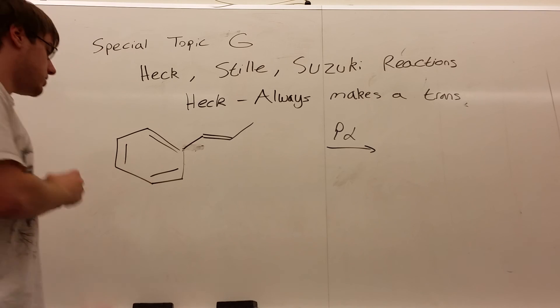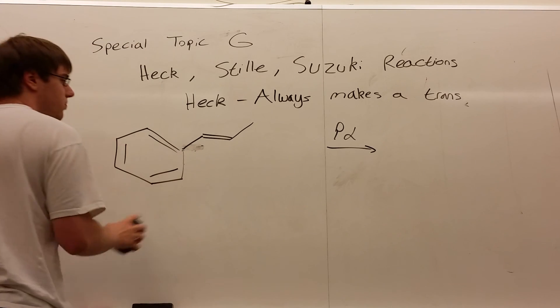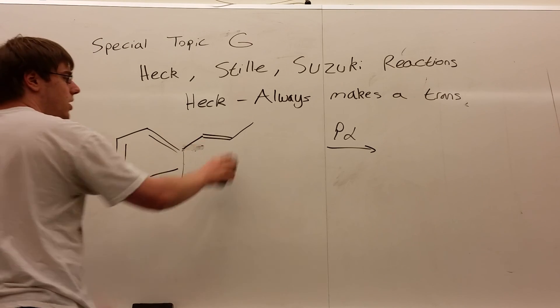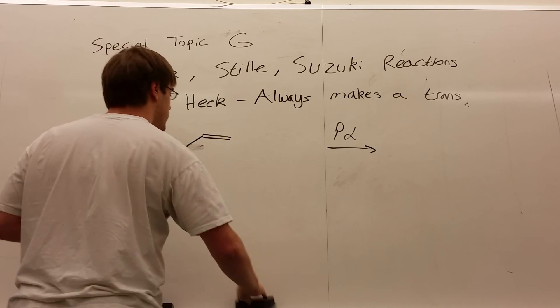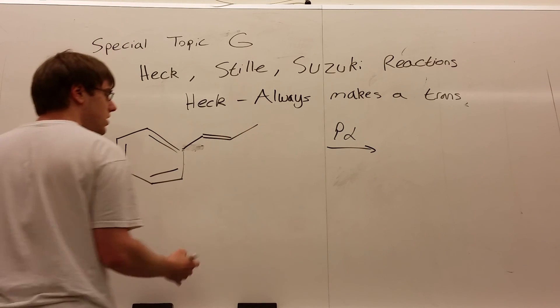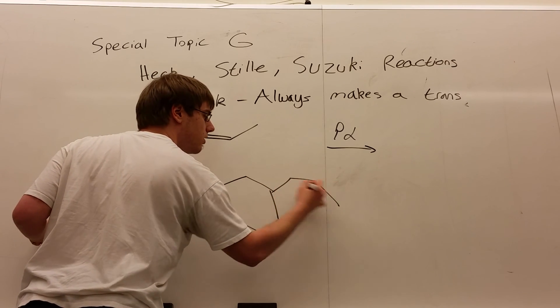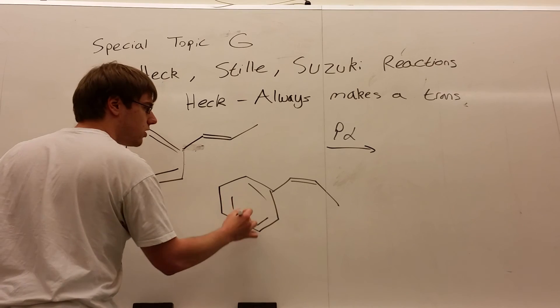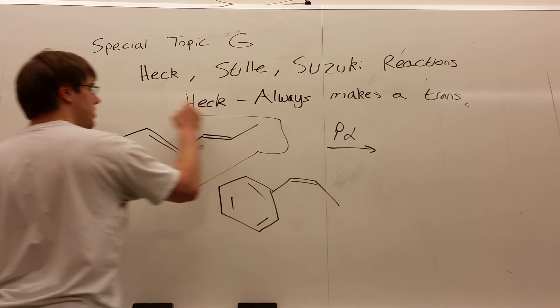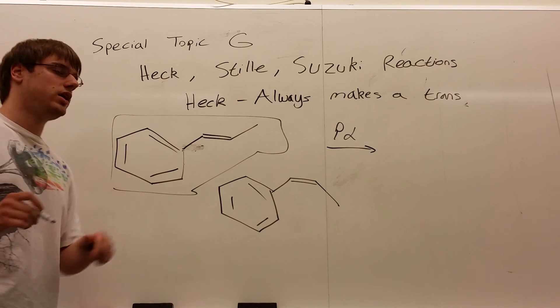How would that translate into another question? Well, typically this is the one you're going to expect, but if they gave you two answer choices, one that looked like this, and one that looked like this with the benzene, but now you have a cis-double bond, you know which one should be your answer. It's got to be this one because it only makes the trans-product. This is the incorrect choice.